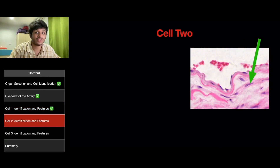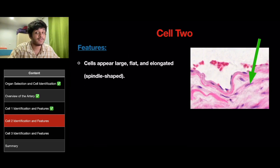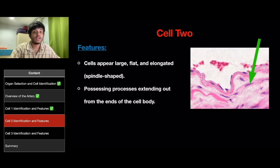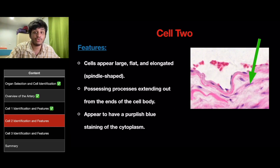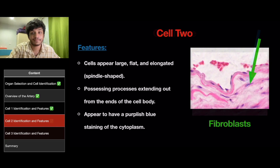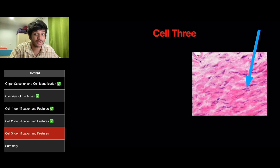Now let's look at cell 2, which are these cells shown by the arrow. The features of these cells are that they appear large, flat, and elongated, which is also known as spindle-shaped. They possess processes that extend out from the ends of the body of the cell. They appear to have a purplish blue staining of the cytoplasm. So this fits the description of fibroblasts.